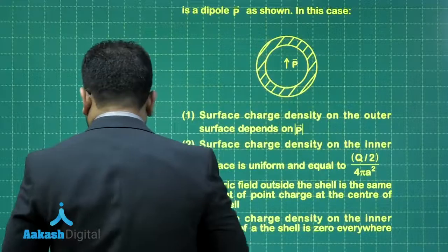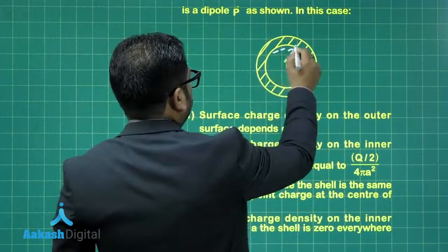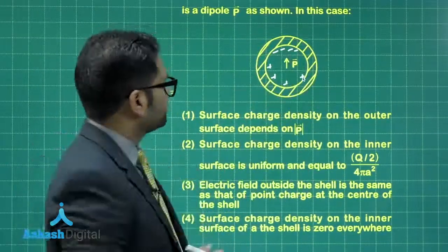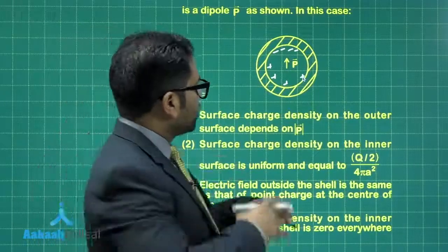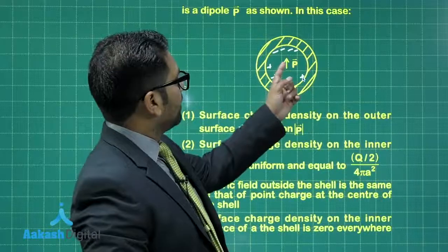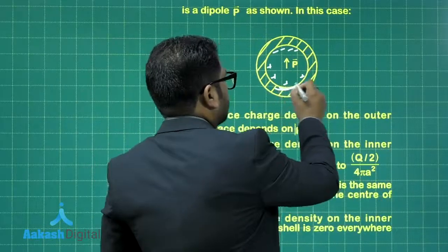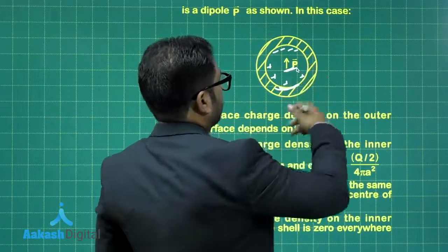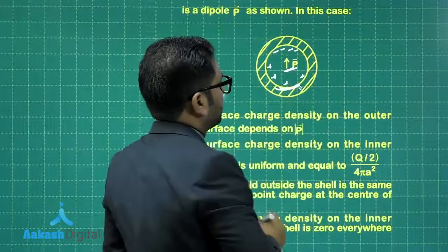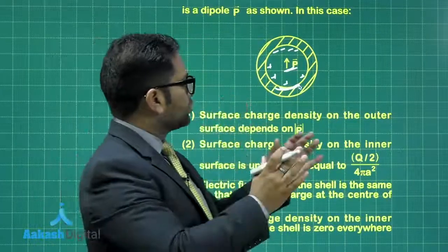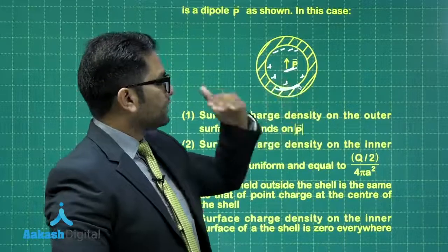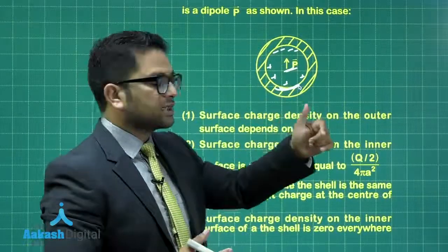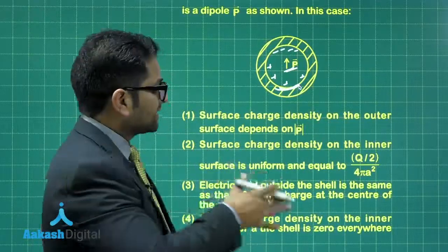Due to the dipole, a non-uniform induced charge arrangement appears on the inner surface of the shell. Using the shell theorem, immediately outside the inner boundary, the effects of the dipole and the internal induced charges cancel to zero. On the outer surface, there is no induction from the dipole.